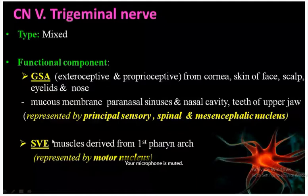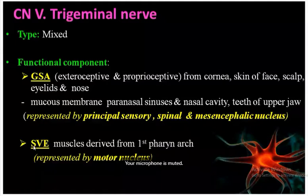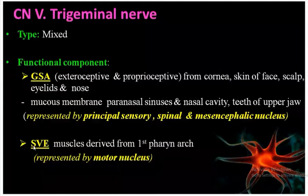Other cranial nerves with the same functional component (special visceral efferent): the facial nerve (second pharyngeal arch), glossopharyngeal nerve (third pharyngeal arch), and vagus nerve (fourth and sixth arches).